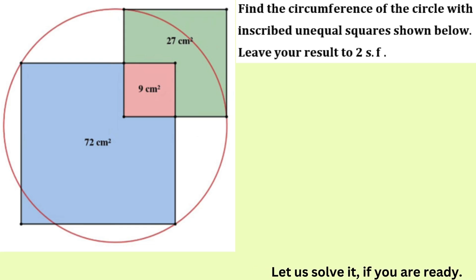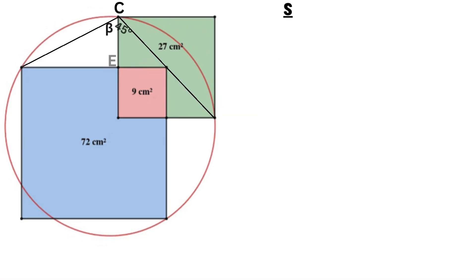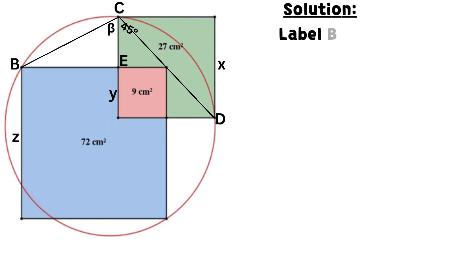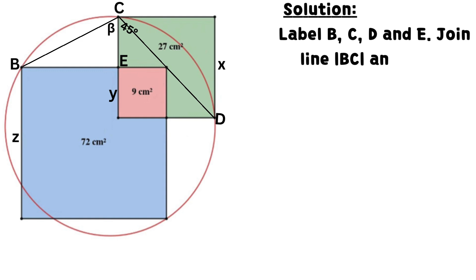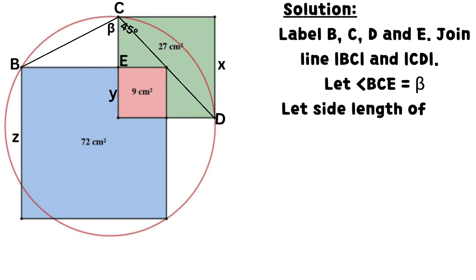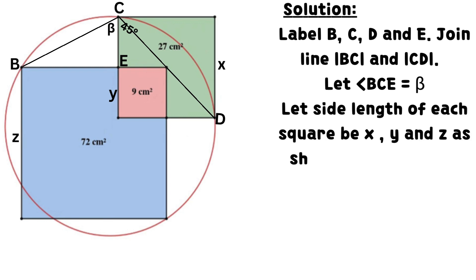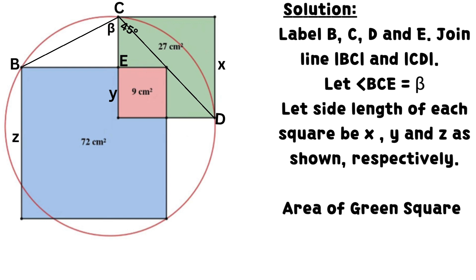We are required to find the circumference of the given circle, leaving the result to two significant figures. Label points B, C, D, and E. Join lines BC and CD. Let angle BCE equal beta. Let the side length of each square be x, y, and z as shown respectively.